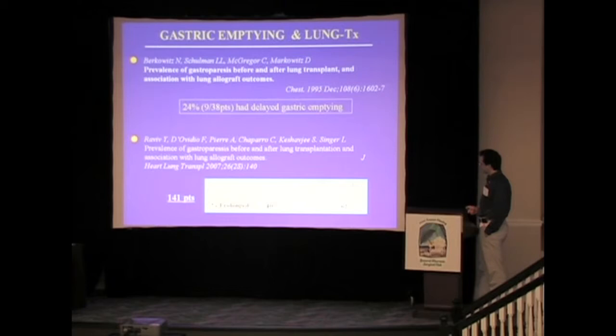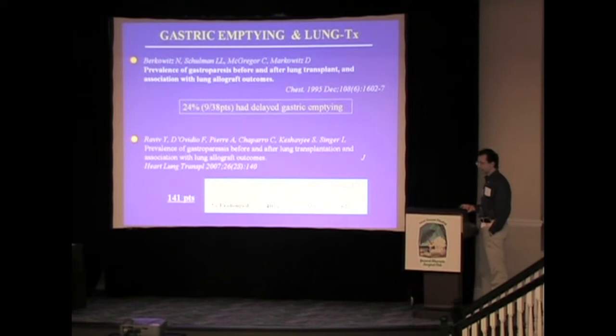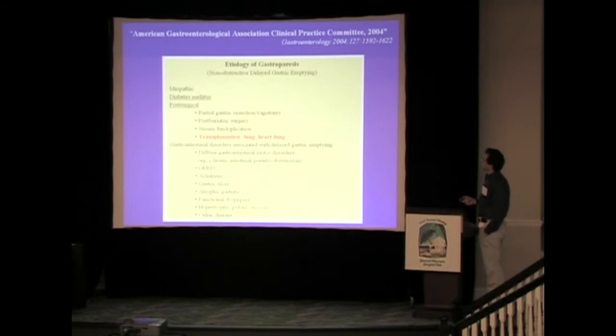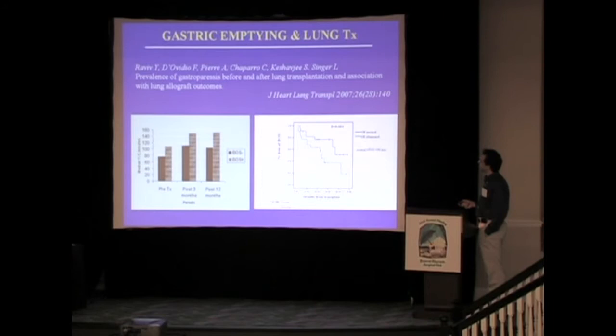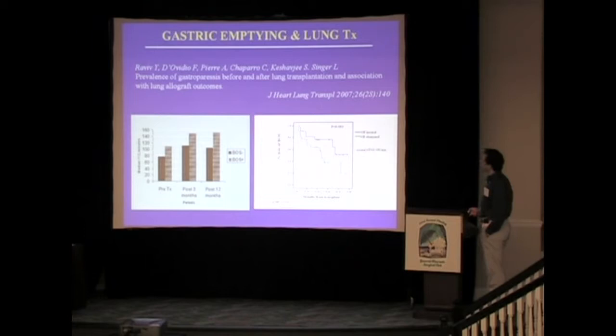More recently, from the group in Toronto, in 141 patients tested at 3 months and 12 months, 62% to 75% of lung transplant patients had delayed gastric emptying. Lung transplantation has been included as a potential cause of non-obstructive delayed gastric emptying by the AGA in 2004. Patients who developed BOS tended to have greater delayed gastric emptying pre-transplant, at 3 months, and at 12 months after transplant, and trended toward developing BOS earlier.